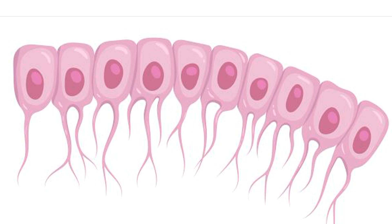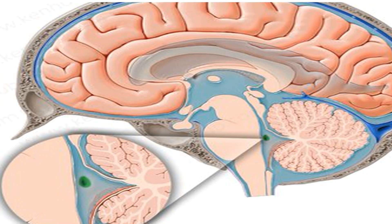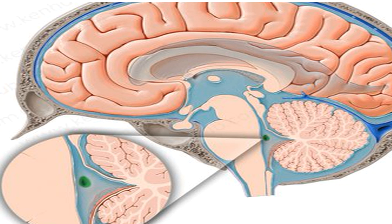The fourth group of neuroglia is ependymal cells. These cells line the cavities of the brain, which neuroanatomically are called ventricles — we will learn about them in detail in coming videos. The brain has a network of communicating cavities called ventricles that are filled with cerebrospinal fluid, or CSF, which is produced by ependymal cells. CSF is very important in protecting and supporting the brain. It acts as a shock absorber, reduces the effective weight of the brain and spinal cord, provides nutrients to the brain, and assists in the removal of waste products.